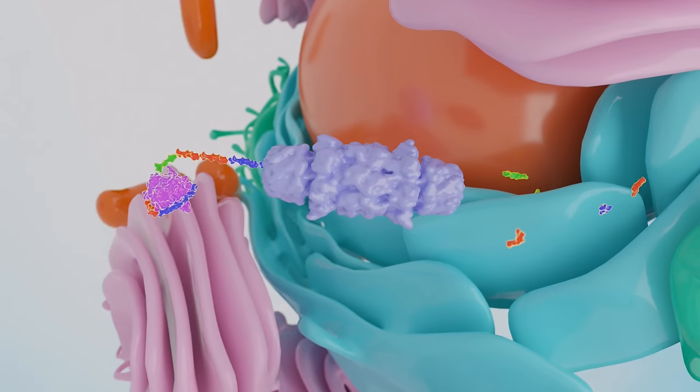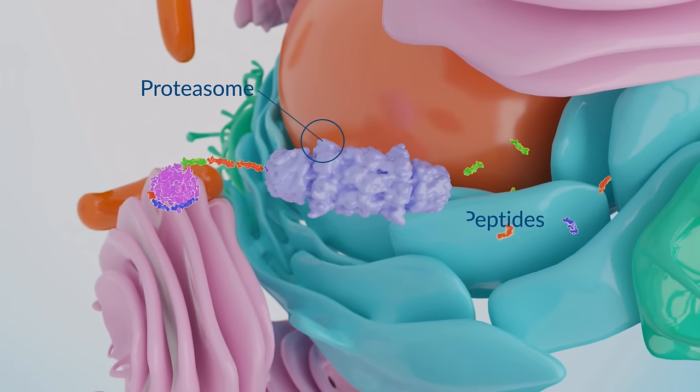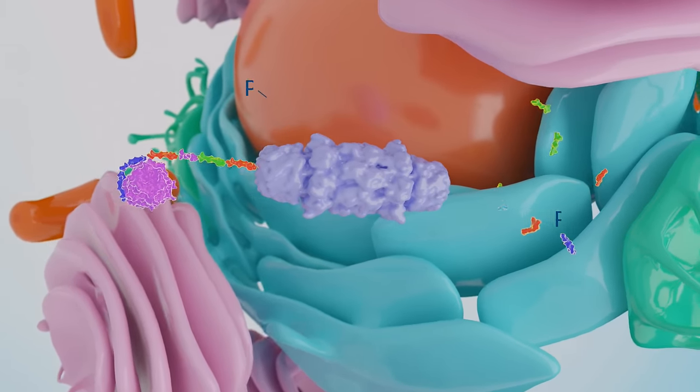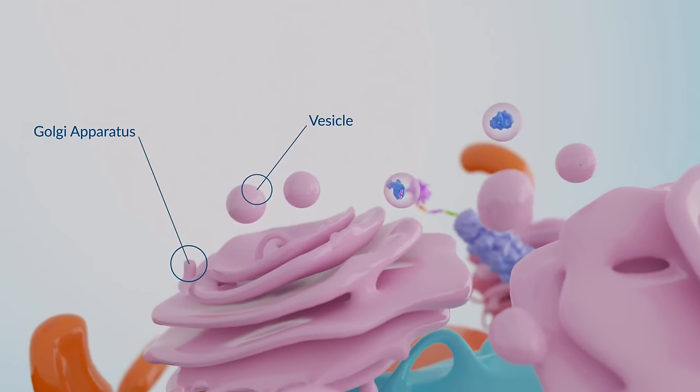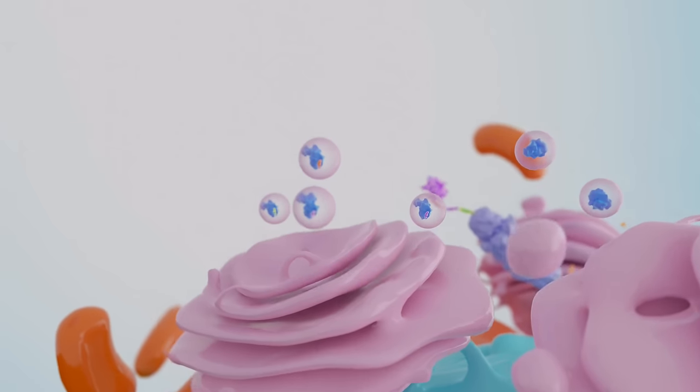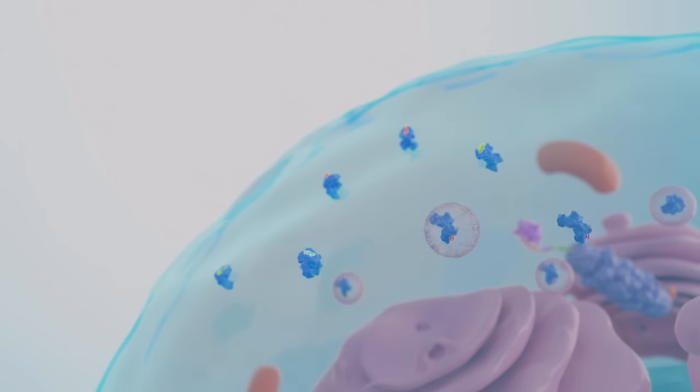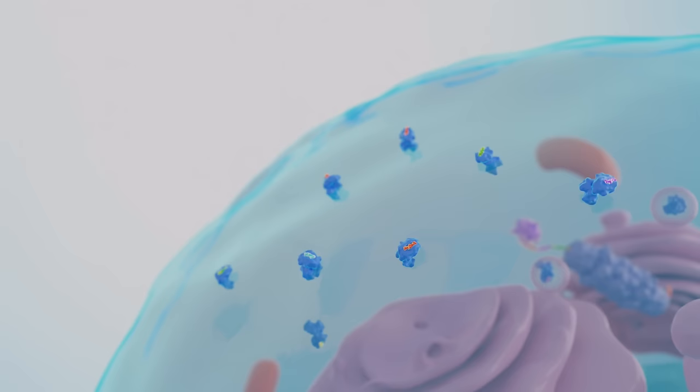In the cytosol, proteins are constantly turned over and degraded by the proteasome. A portion of the resulting peptides may be loaded into the peptide binding cleft of the MHC class 1 molecules and displayed on the cell surface for inspection by CD8 positive cytotoxic T lymphocytes.